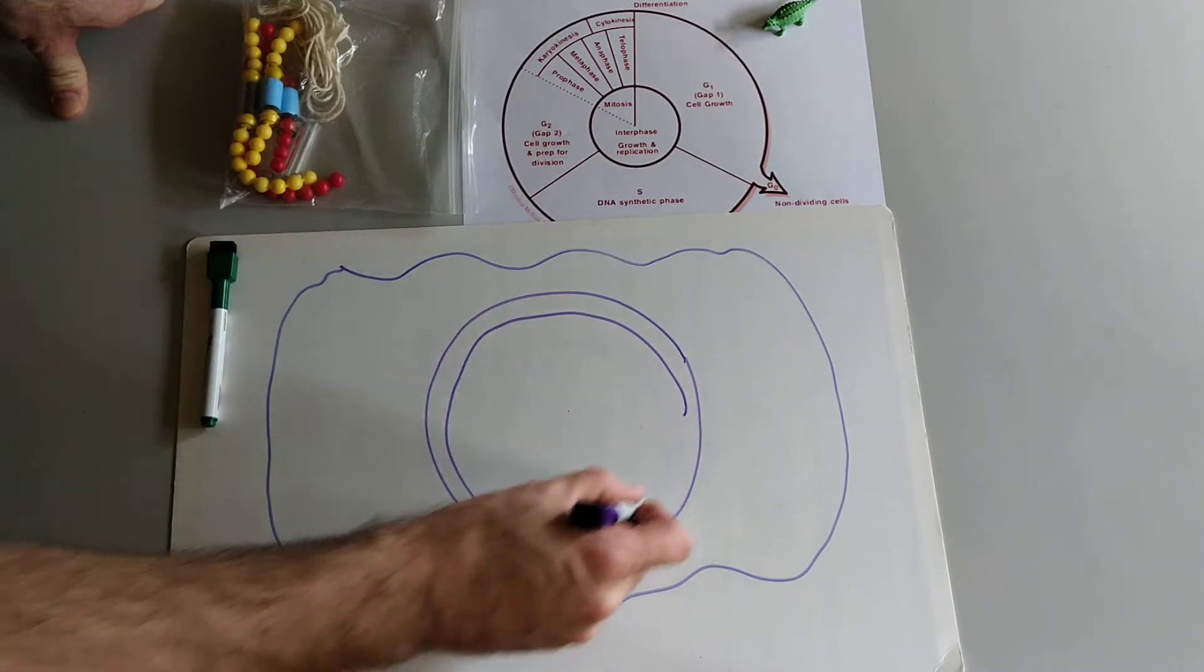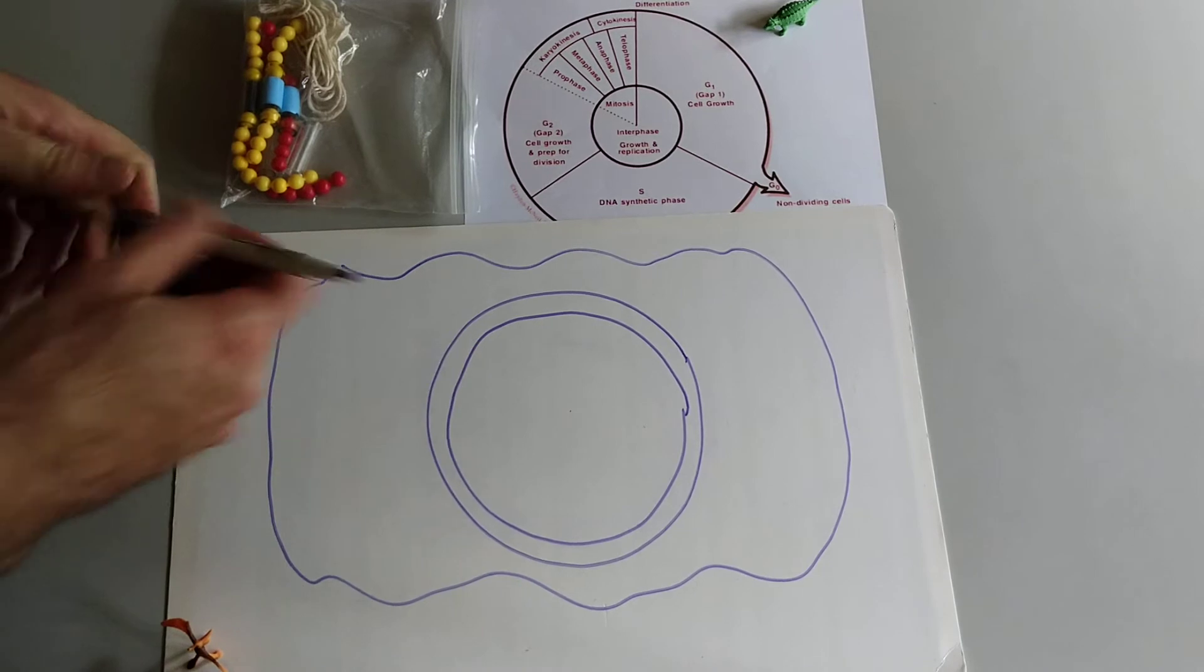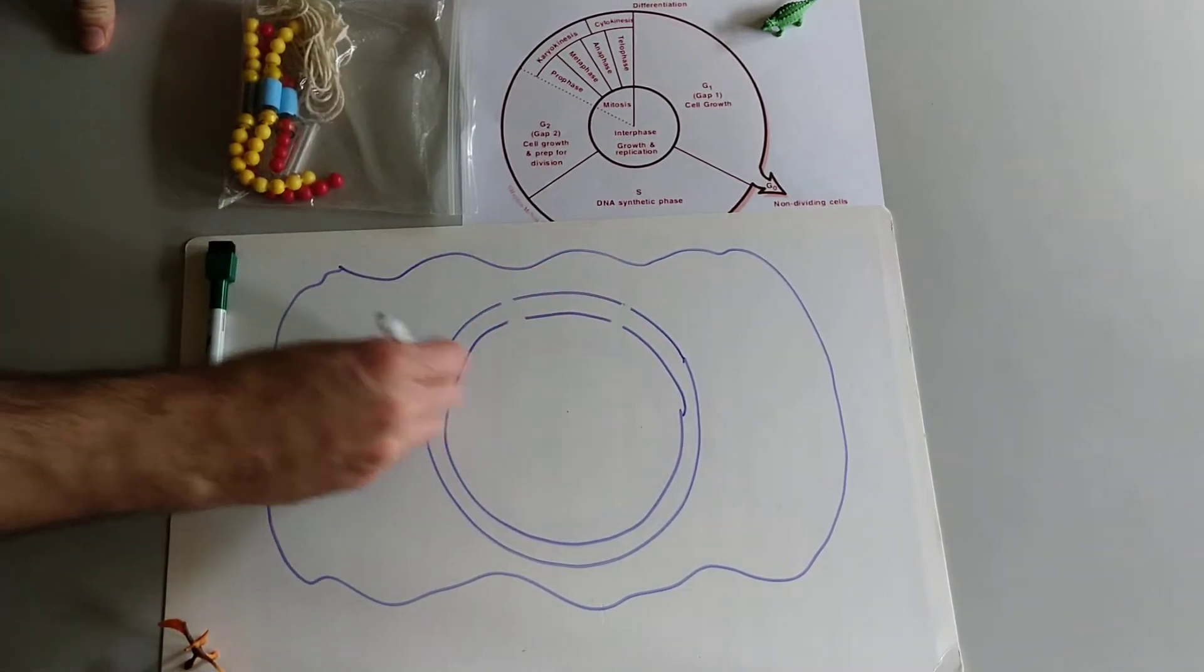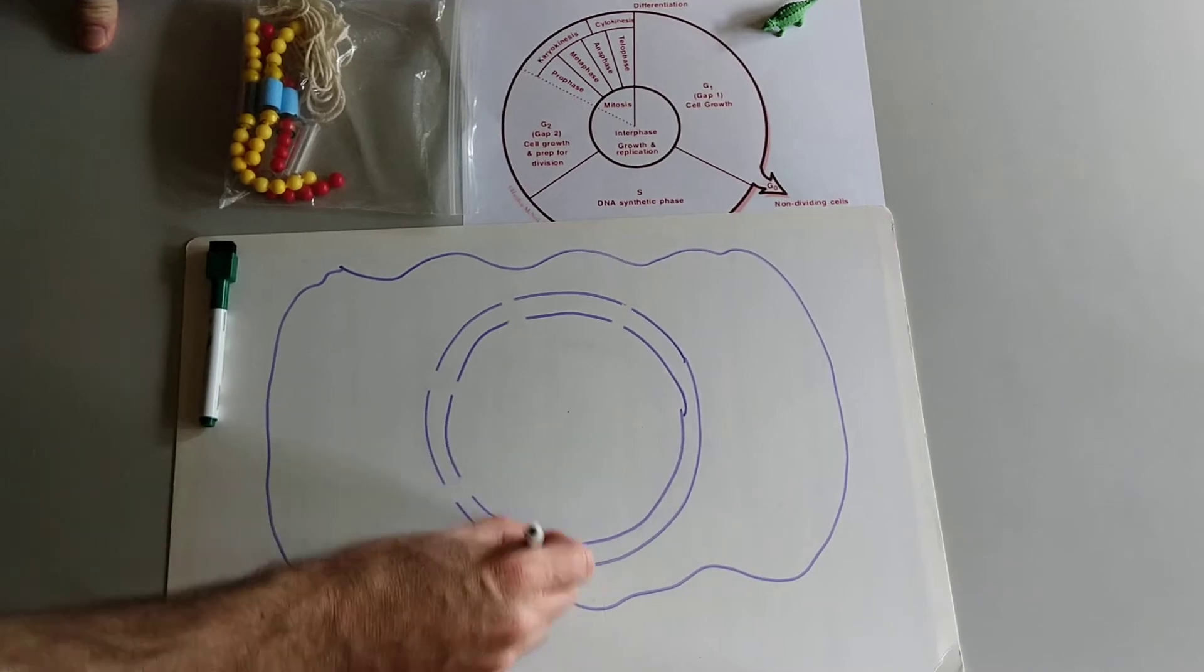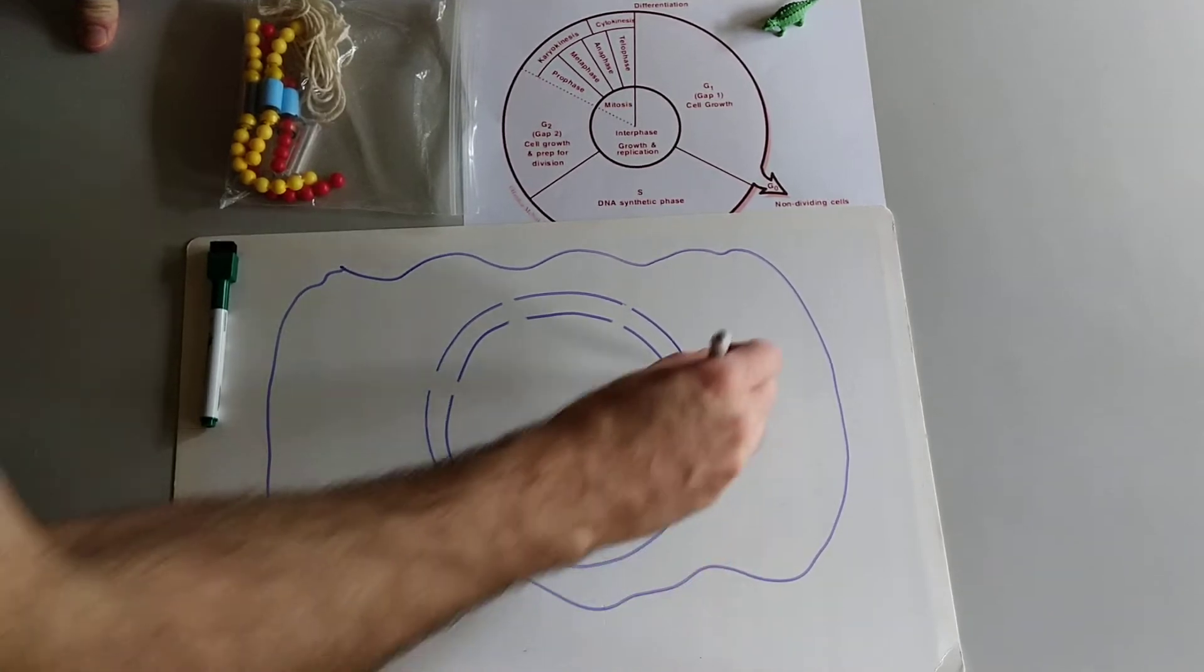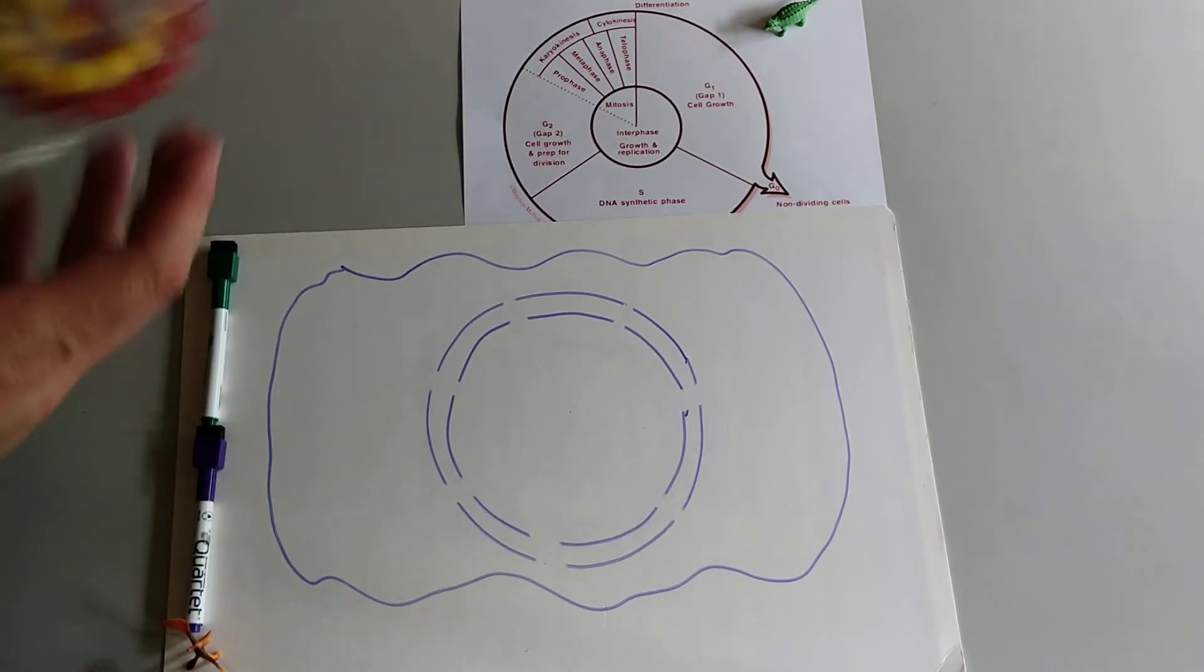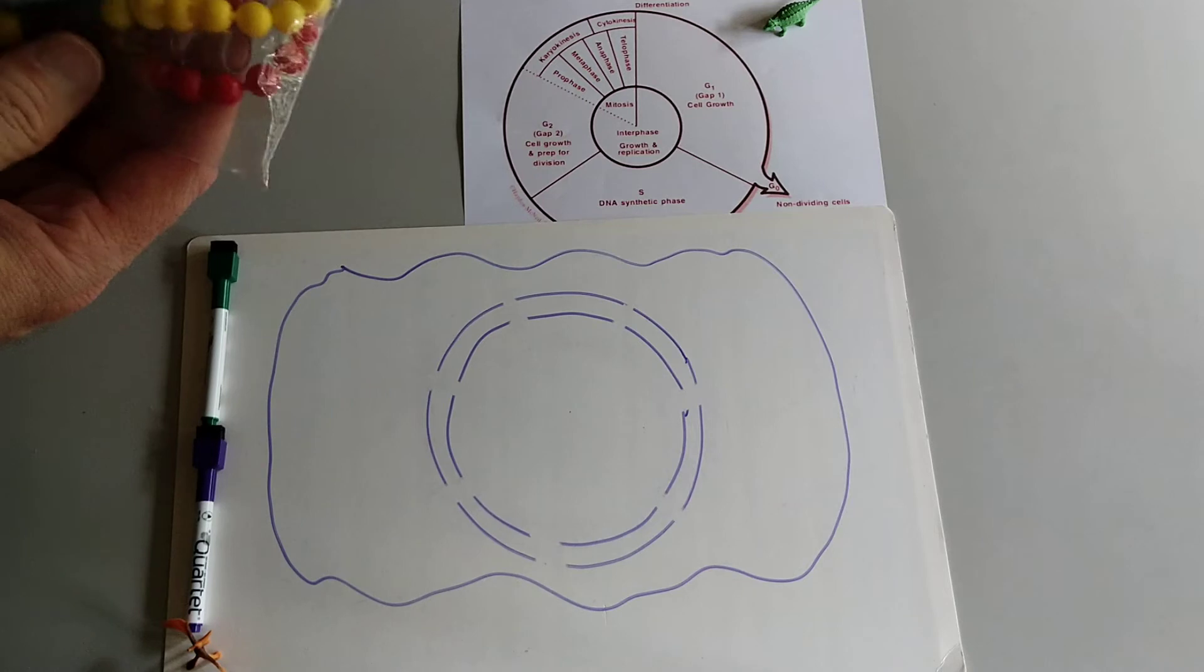And the nuclear membrane, remember, is a double membrane with some holes in it. That is what I'm going to draw. Alright and the nucleus again is where the genetic material is housed in the form of chromosomes.